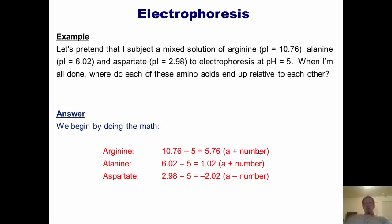What does that mean? It means that when you run the electrophoresis, arginine is going to move toward the negative electrode. Alanine has this pI value. I subtract 5 from it, I end up with 1.02, which is also a positive number. Now 1.02 is obviously not as large a positive number as 5.76. What does that mean? It means that alanine will also move toward the negative electrode, but not by as much as arginine.